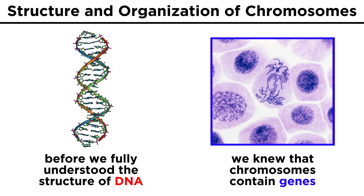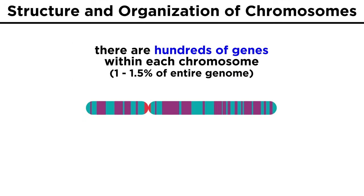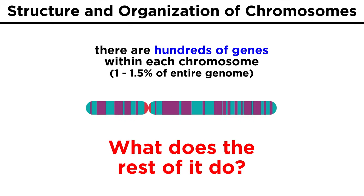So before DNA structure was fully understood, we knew that chromosomes contained genes. As we now understand, each chromosome contains hundreds or even thousands of genes. Even still, genes only comprise around one to one-and-a-half percent of the genome — so what's the rest?